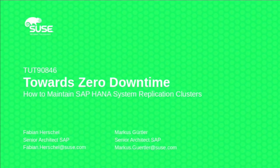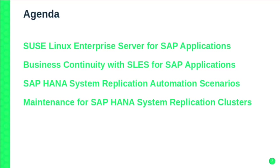My name is Fabian Herschel, senior architect for SUSE at the SAP Linux Lab, mostly responsible for HA solutions — so for limiting or minimizing downtime, thinking about how you get your workloads more online, more highly available. That's roughly the agenda we want to show: a little bit about what is SUSE Linux Enterprise Server for SAP applications, because we have a special bundle there. Then how to achieve business continuity, HANA system replication, scenarios we support, and how to do maintenance with the system.